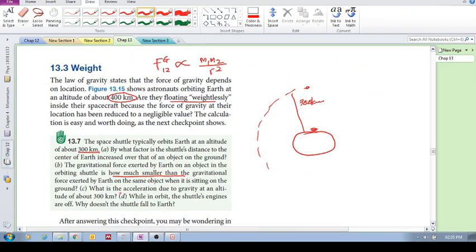So we've answered, what is the acceleration due to gravity at 300 kilometers? We just saw that, 8.9 meters per second squared.